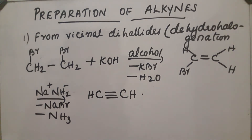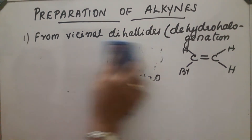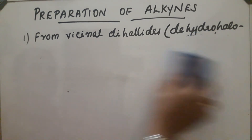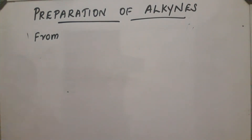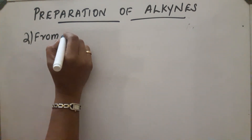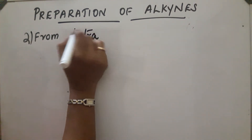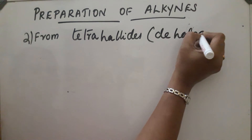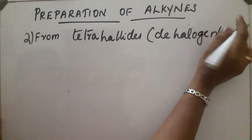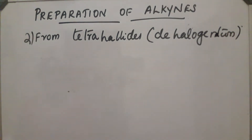The second preparation is from tetrahalide compounds — compounds containing four halogen atoms. This reaction is also called dehalogenation. In this step, a compound with four halogen atoms present is used, and these four halogen atoms are removed to obtain an alkyne.